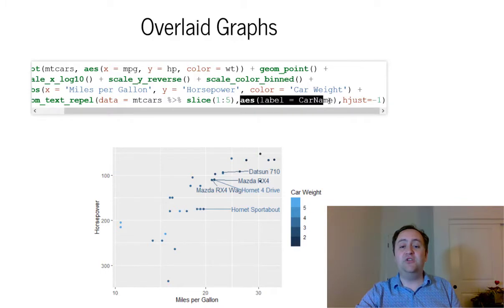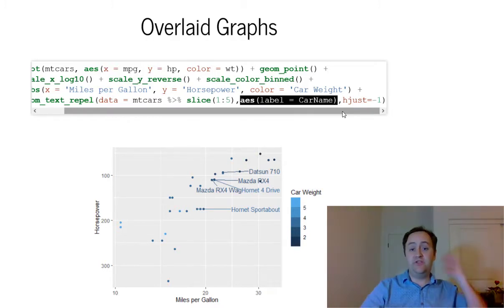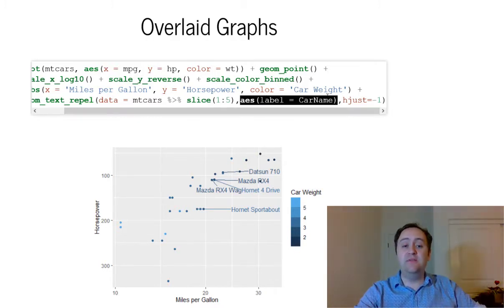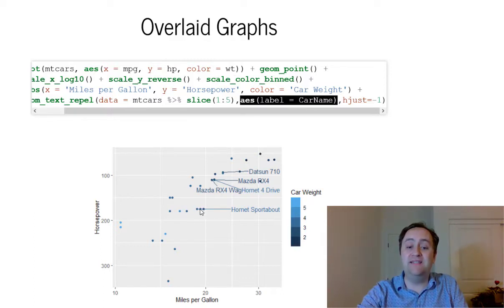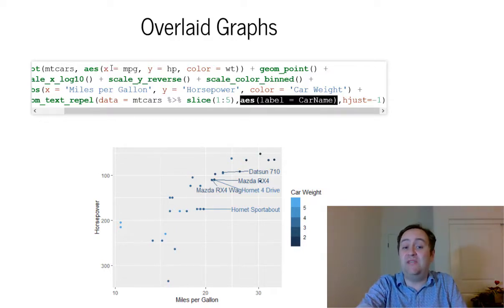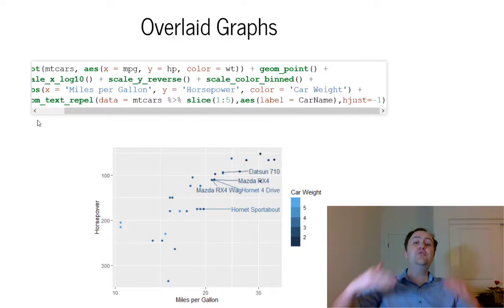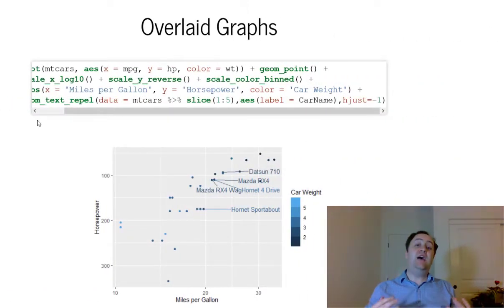I set the aesthetic label equals car name, because geom_text_repel uses label for the text. But it's still going to carry through x equals mpg, y equals hp, and color equals weight from before. Notice how it's still in the same x and y position as the original data points — I've just added on the new label. If I want to change the x, y, or color variables, I would need to reset them in the new geometry. That's how you can overlay one kind of geometry on top of another, either without resetting anything or by changing the data and/or aesthetic as you add a new geometry.